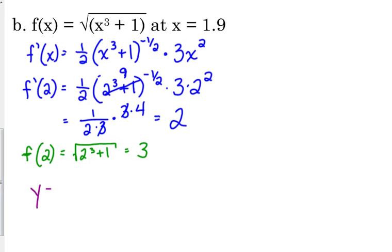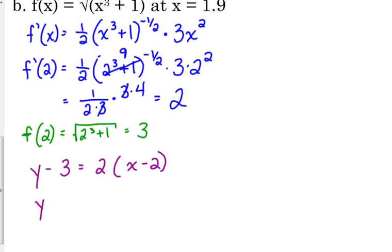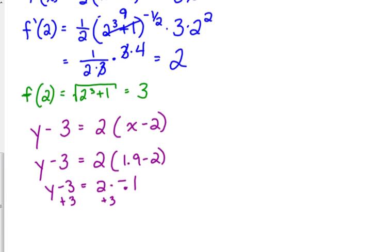So our tangent line is y minus 3 is equal to 2 times x minus 2. Plug in our value in question, 1.9. So y minus 3 is equal to 2 times negative 0.1. So we add 3 to negative 0.2. That gives us 2.8.